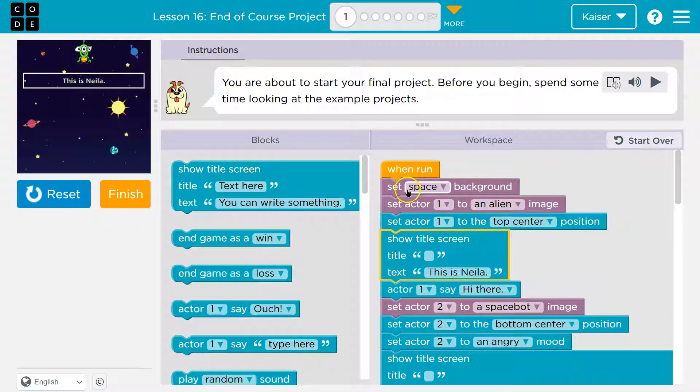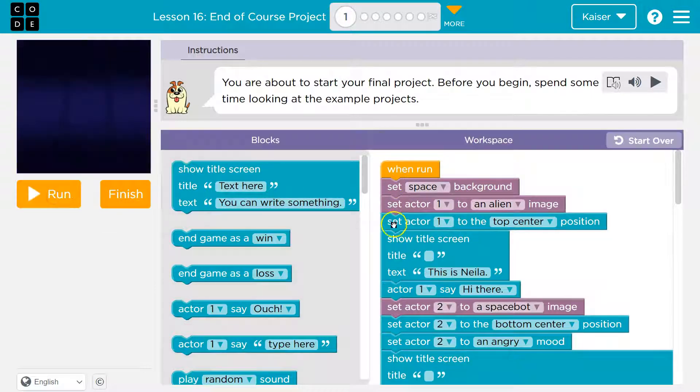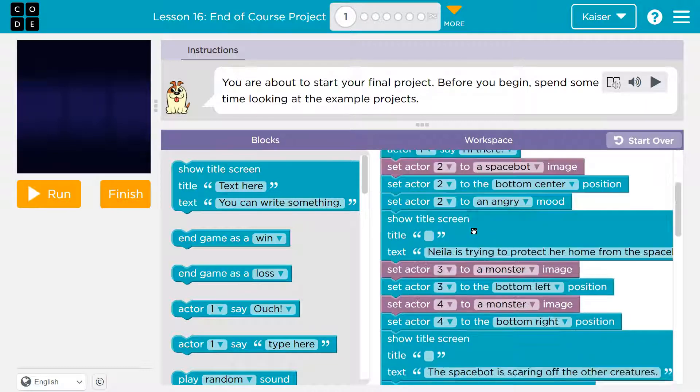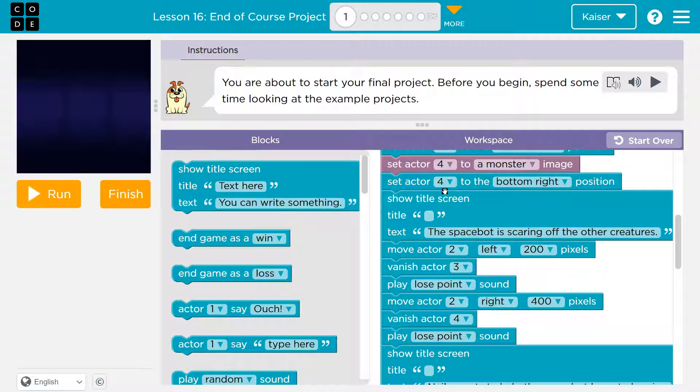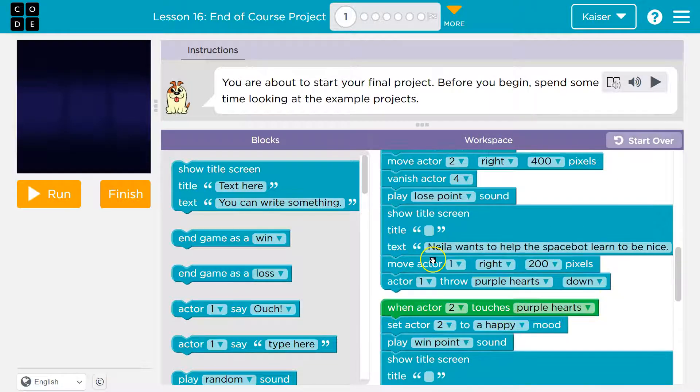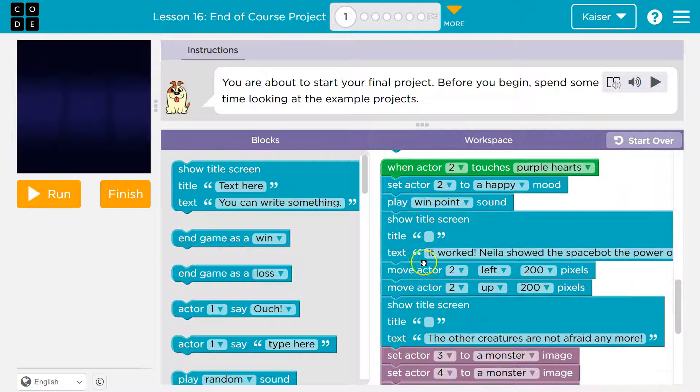We set a background. So if I hit run here, boom, background. Then the actor is drawn. Set the actor to the top center. Notice that we can't decide what to do with our actor until it's already on the screen, right? We wouldn't set the actor to the top center before we create it. Okay. And show the title. Yep. Move the actor. The order of these things runs. They go on top of each other.